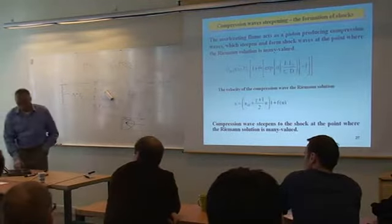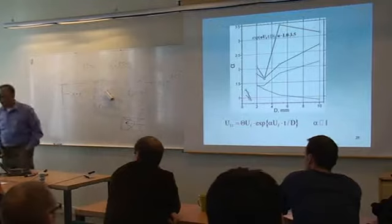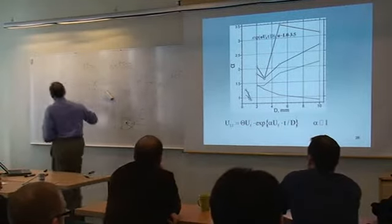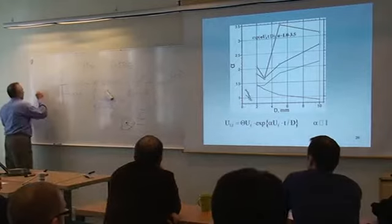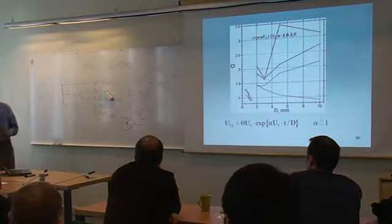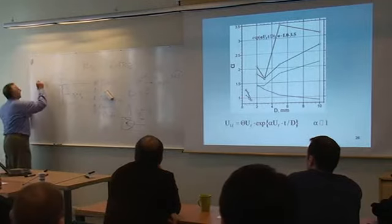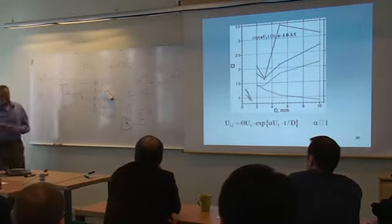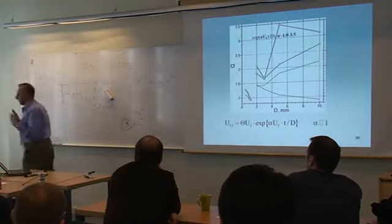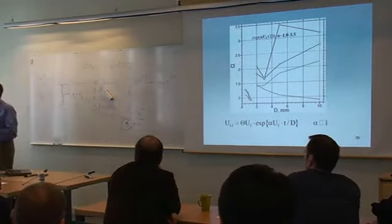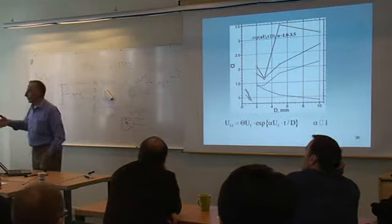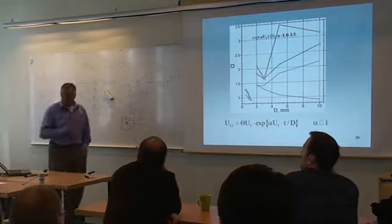U_F is the normal velocity of the flame. U_LF is the combustion wave velocity — the velocity measured in the laboratory (wall) reference frame. They differ because the combustion wave velocity includes the contribution from the flow that is pushing the flame.